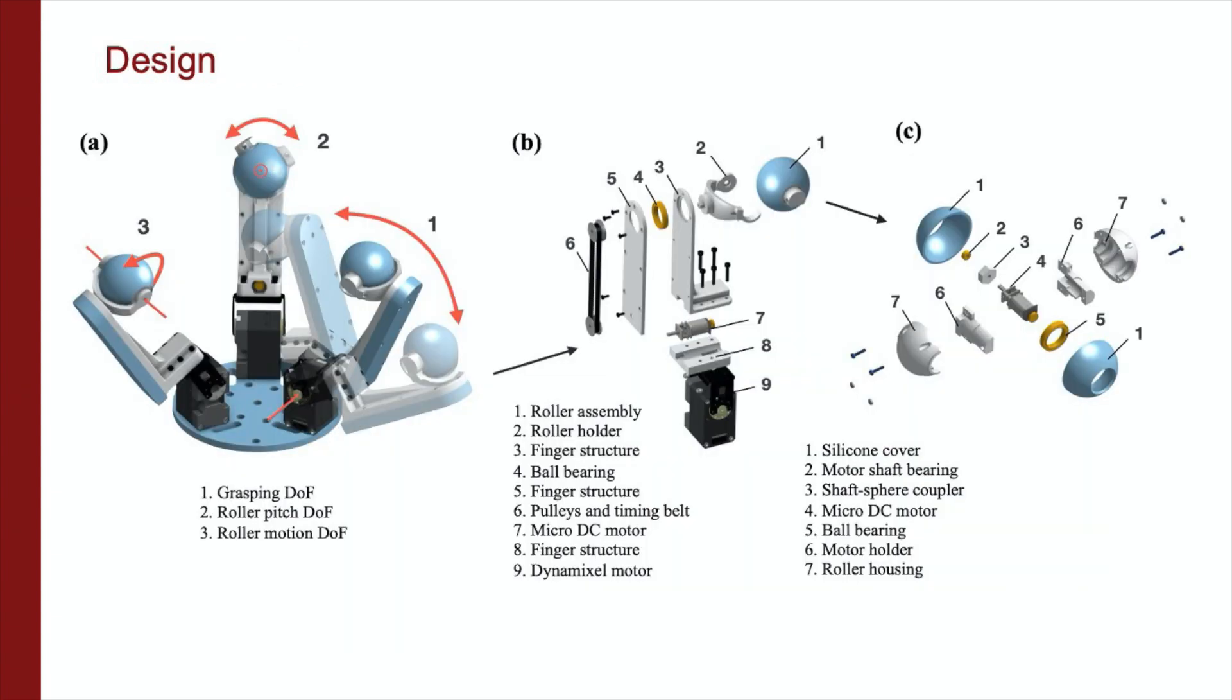The grasper consists of three fingers, each having three degrees of freedom. The first DOF is at the base of each finger and consists of a revolute joint directly driven by a Robotis Dynamixel actuator. The other two DOF are located at each fingertip and are responsible for steering and rolling. The second joint is orthogonal to the first DOF and is driven by a micro DC motor with built-in gearbox and quadrature encoder.